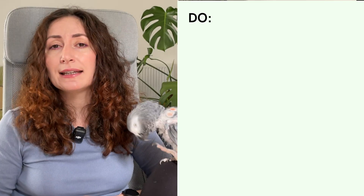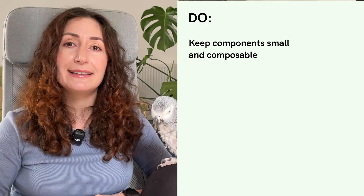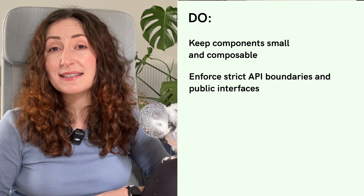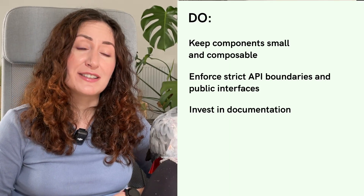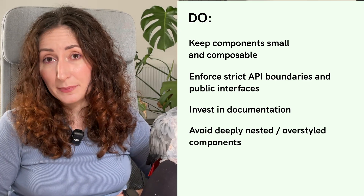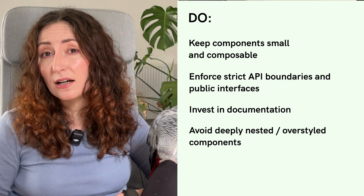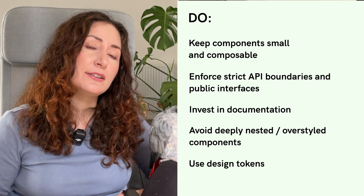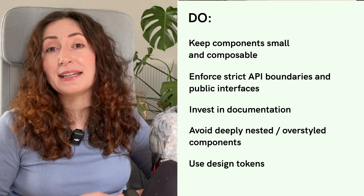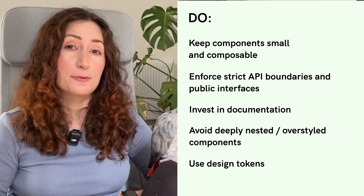Now let's go over the common best practices when building design systems. Keep your components small and composable. Enforce strict API rules and public interfaces. Invest in documentation that reflects real-life usage and examples. Prioritize performance and avoid deeply nested or over-styled components. Use design tokens with meaningful names for colors, spacing and other variables.